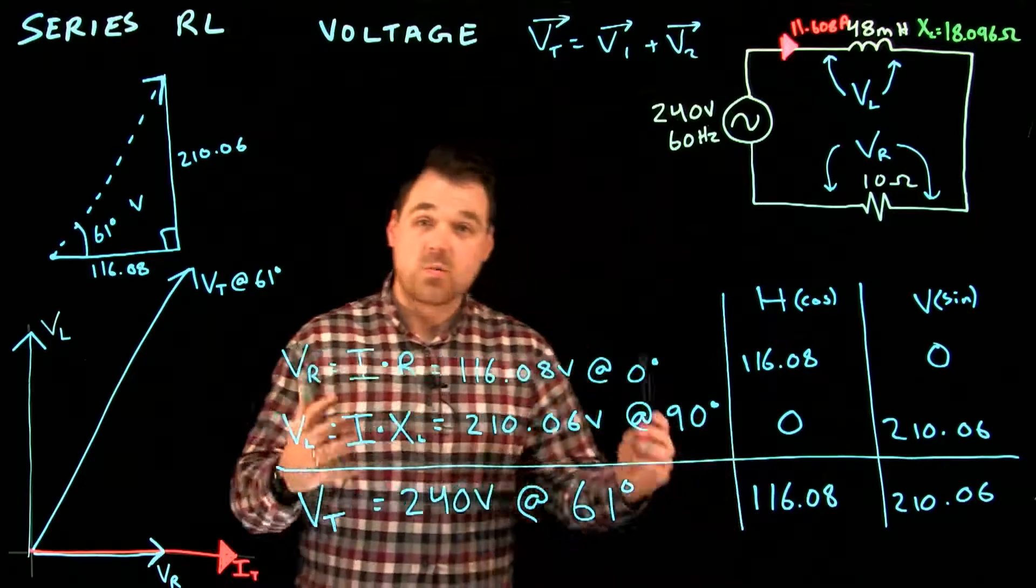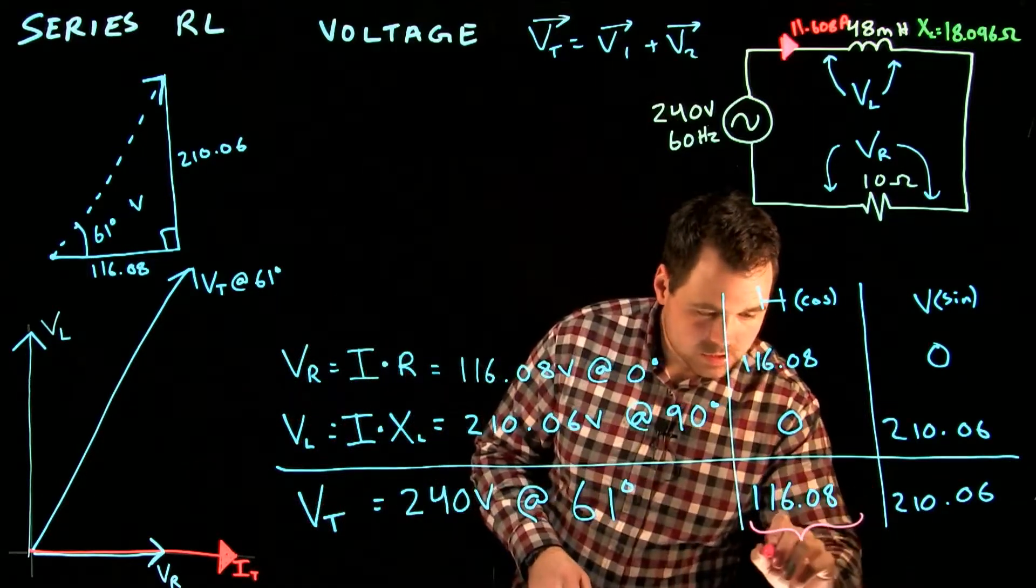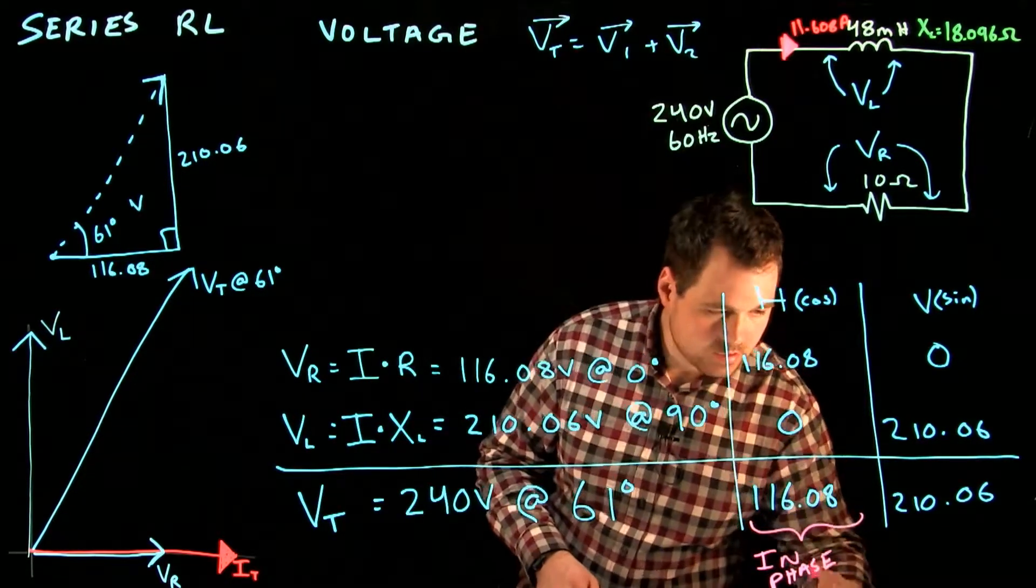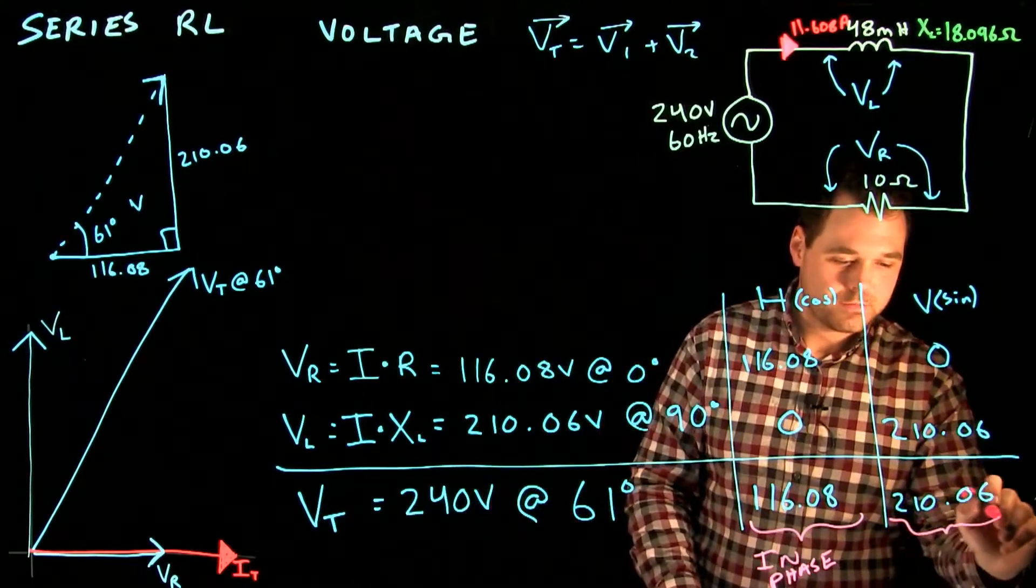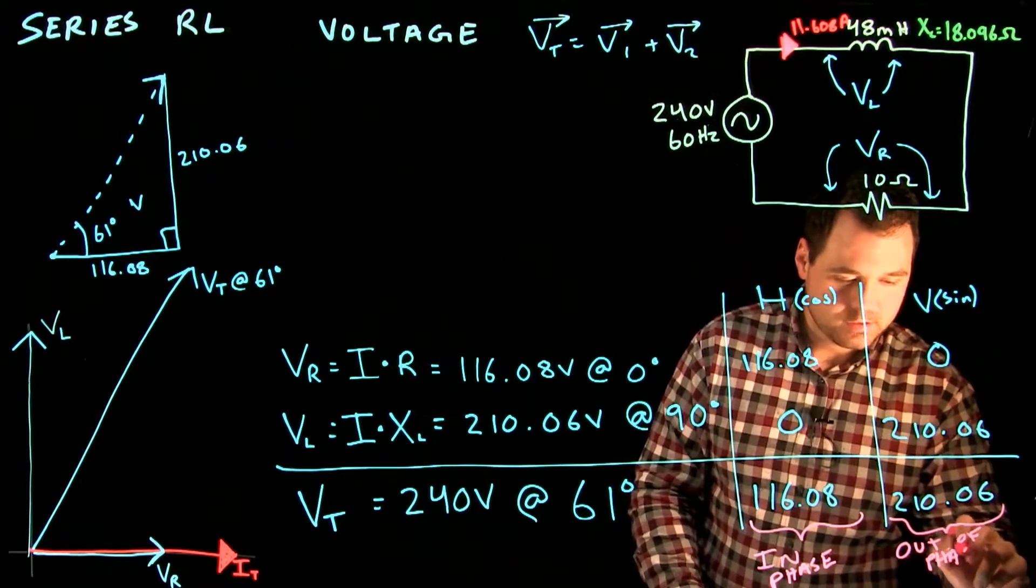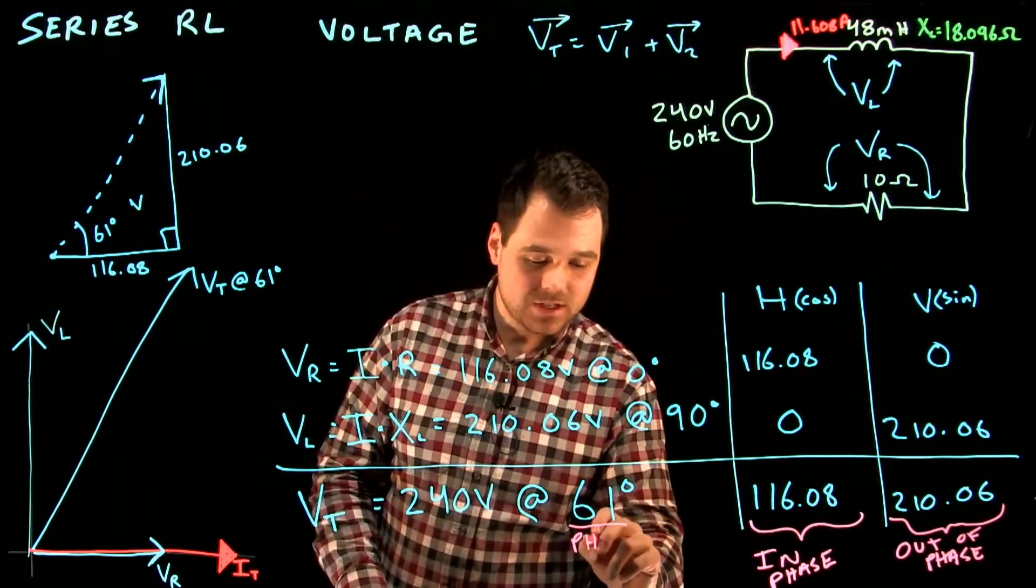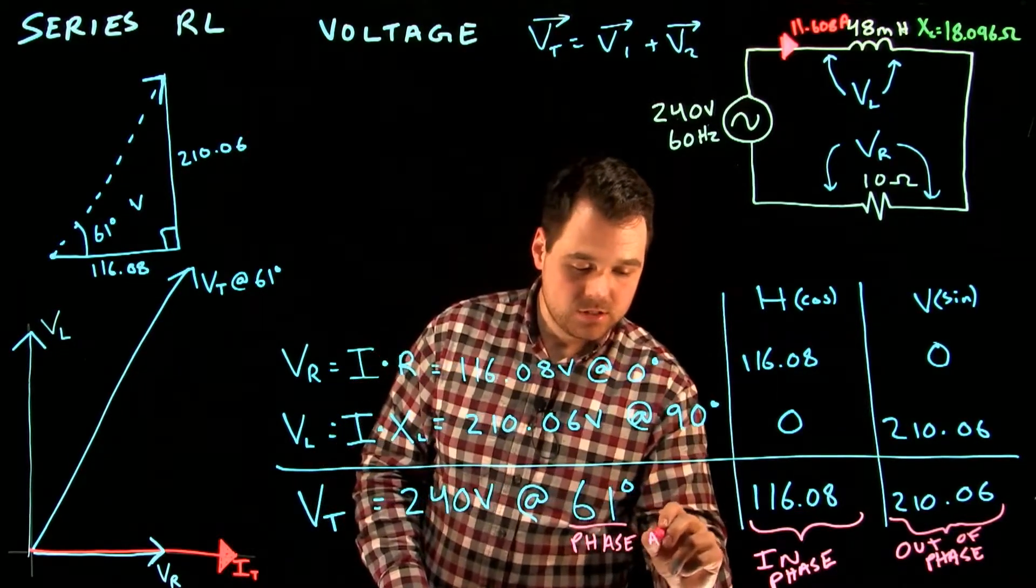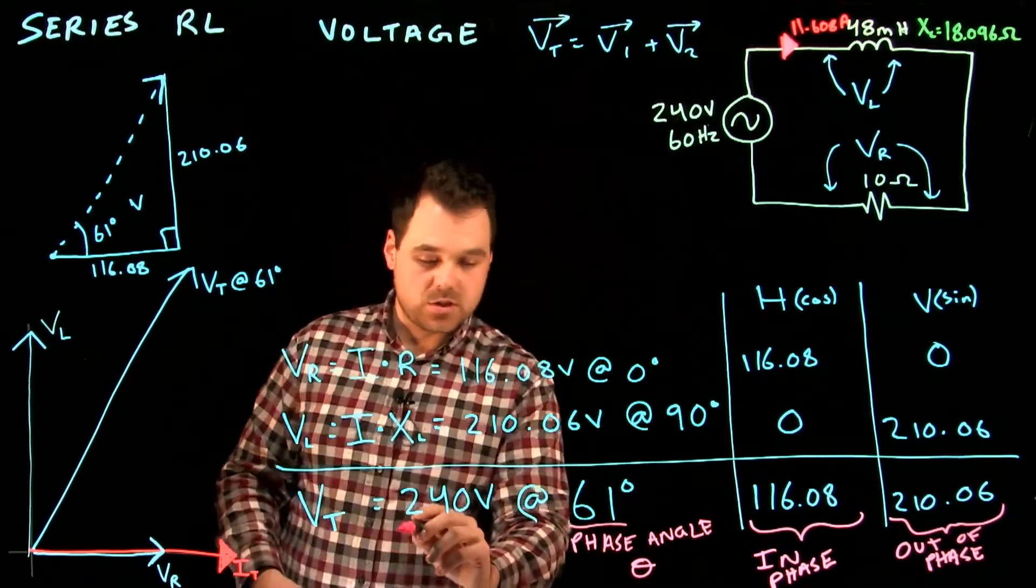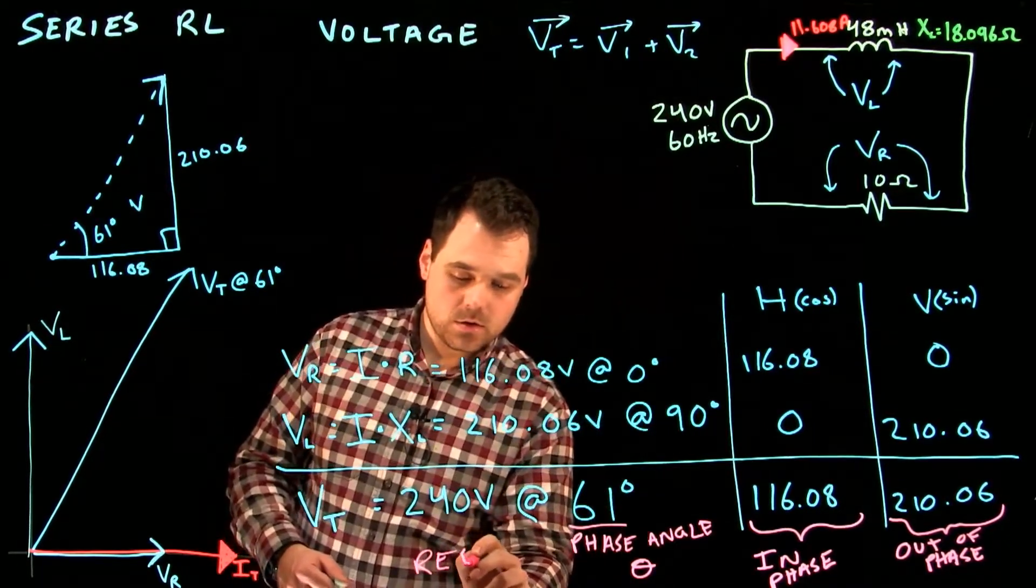A couple last things I want to point out before we jump to the next video. This value right here is often known as my in-phase value. This value right here is often known as my out-of-phase value. This guy right here would be my phase angle, right, or we can call it theta if we want. And this whole section here would be my resultant.